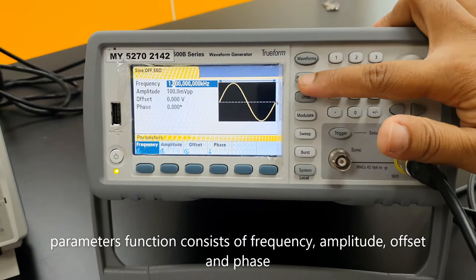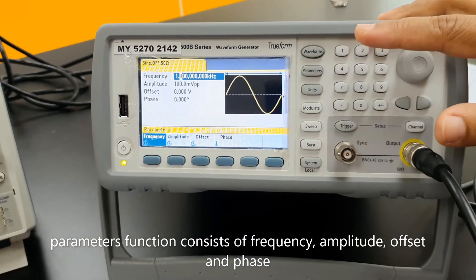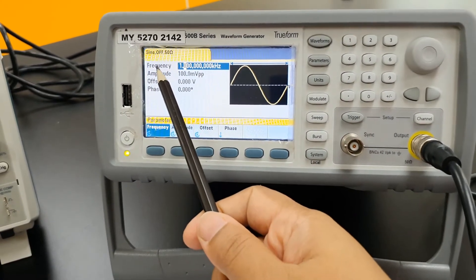Parameter functions consist of frequency, amplitude, offset, and phase values to be set.